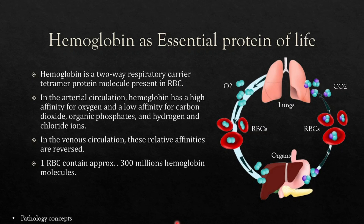Hemoglobin is an essential protein of life. It is a two-way respiratory carrier tetramer protein molecule present in red blood cells. In arterial circulation, hemoglobin has a high affinity for oxygen and low affinity for carbon dioxide. In venous circulation, the relative affinities are reversed. One RBC contains approximately 300 million hemoglobin molecules.